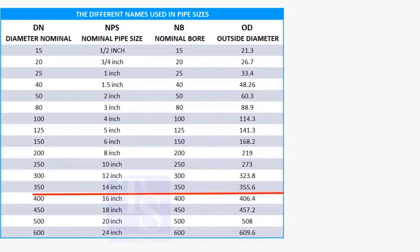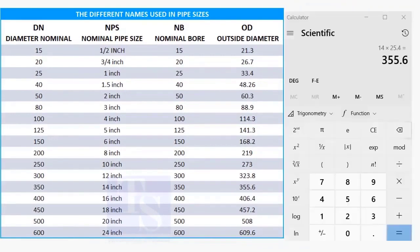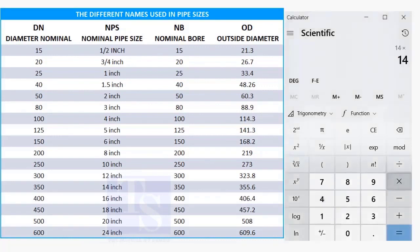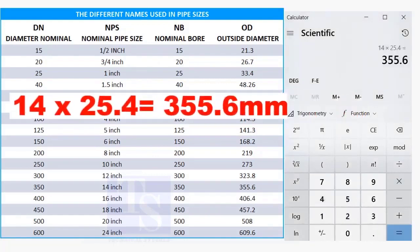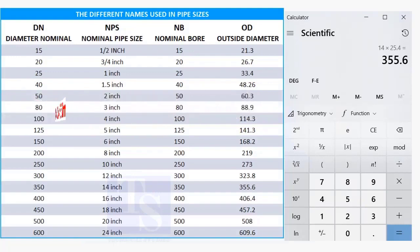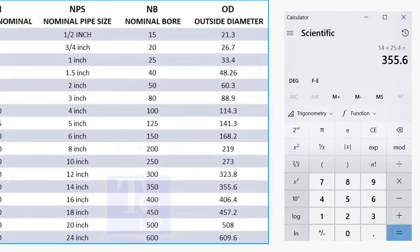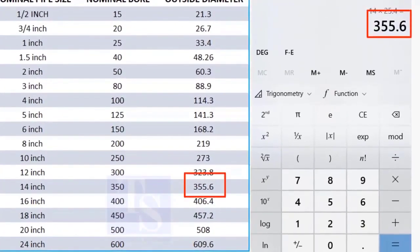Now check the OD of a 14 inch pipe. 14 multiplied by 25.4 is 355.6 millimeters. Calculate the diameter of the bigger pipes and compare the answer with the original size.